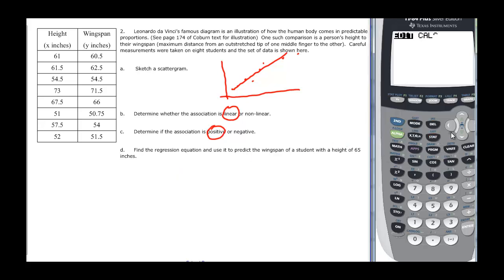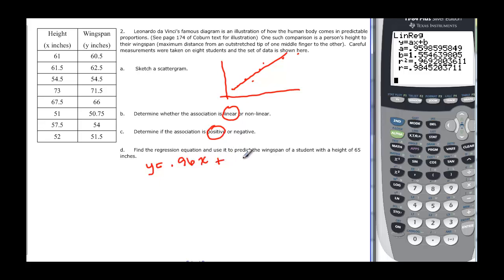So stat, go over to calculate. We're going to do linear, so that's 4, and enter. And now we have y is equal to, I'm just going to go two decimal places this time, so 959 would be .96x, plus 1.554 would be 1.55.